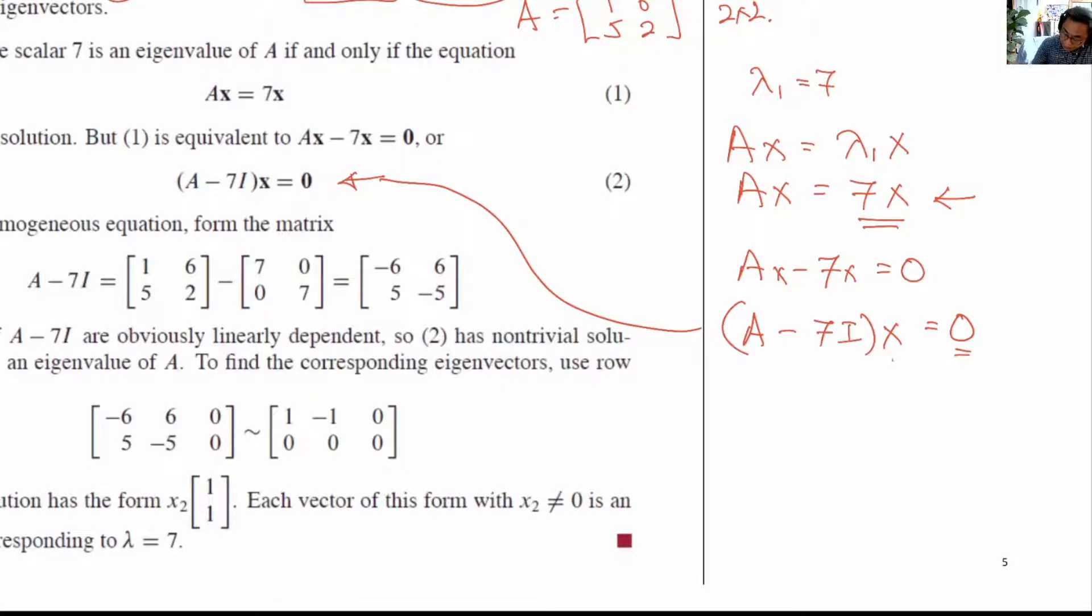Now remember that x, we are trying to find the eigenvector. And eigenvector cannot be the 0 vector. That's the definition. Otherwise, simply we plug in 0, 0 here and a matrix multiplied by a 0 vector will give you a 0 vector on the right-hand side, of course.